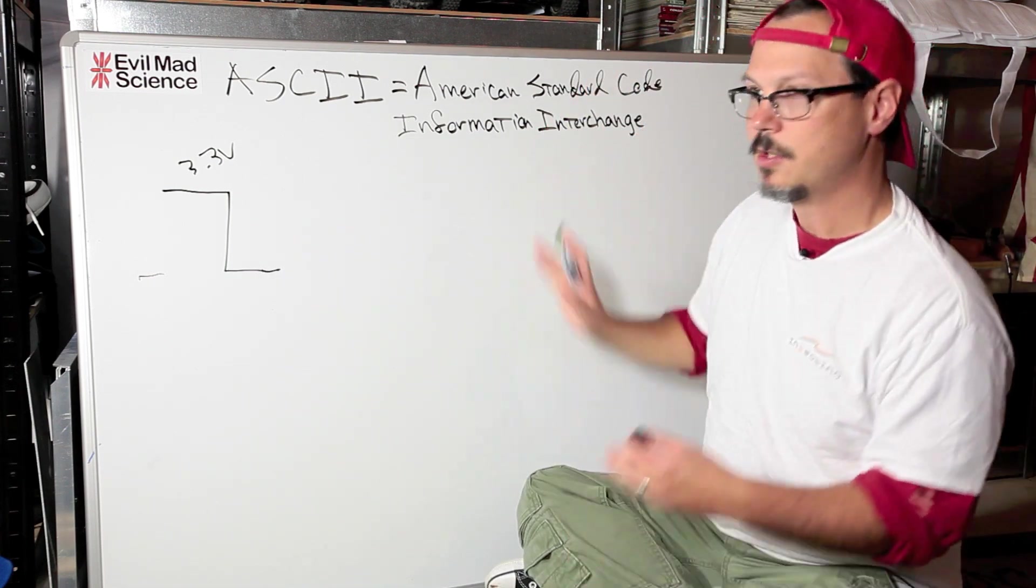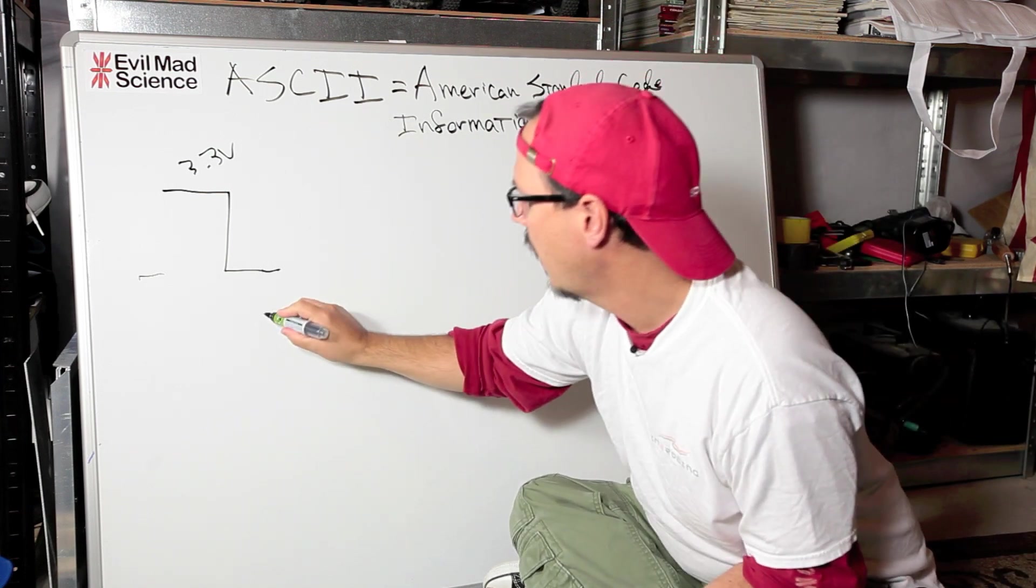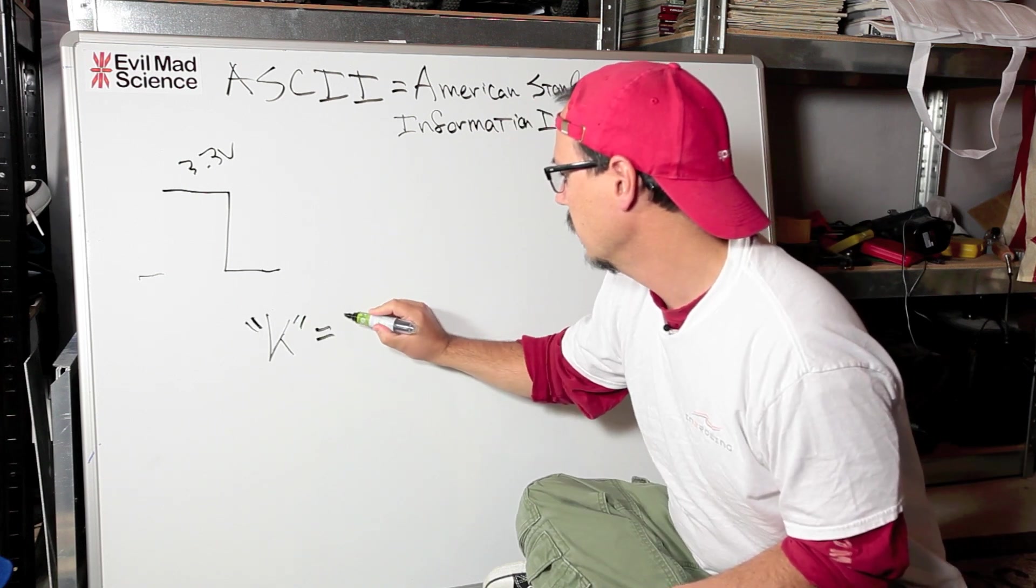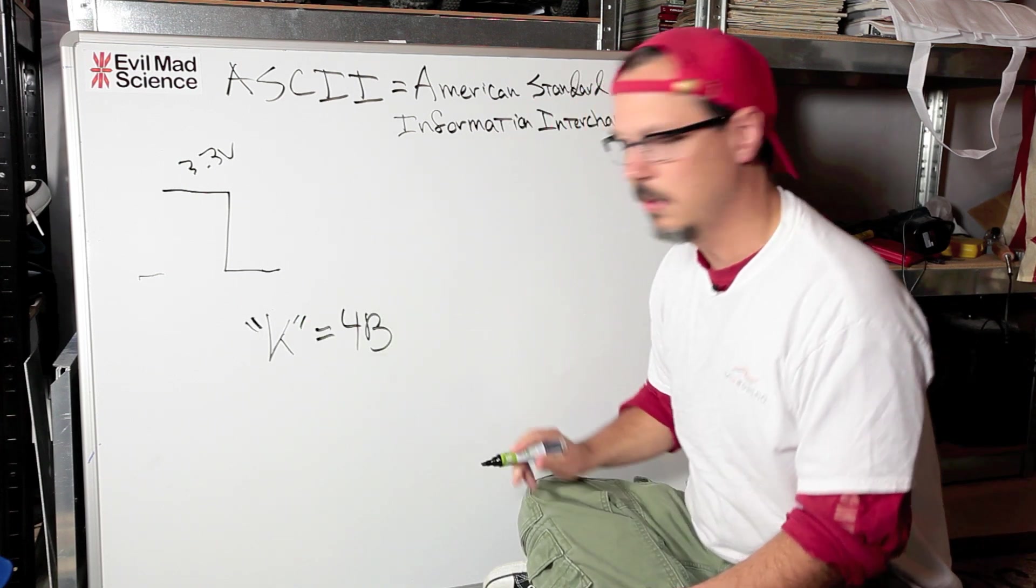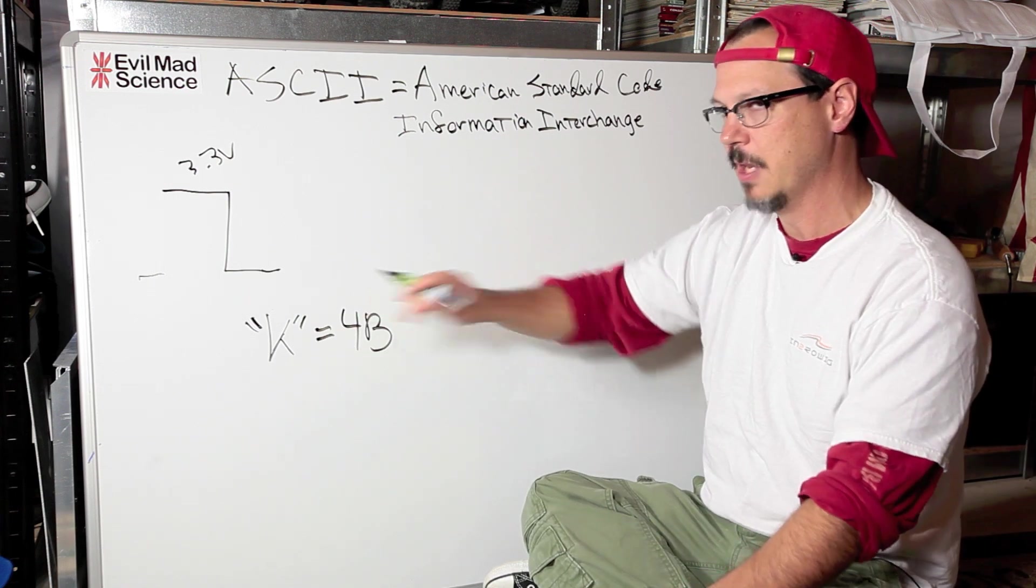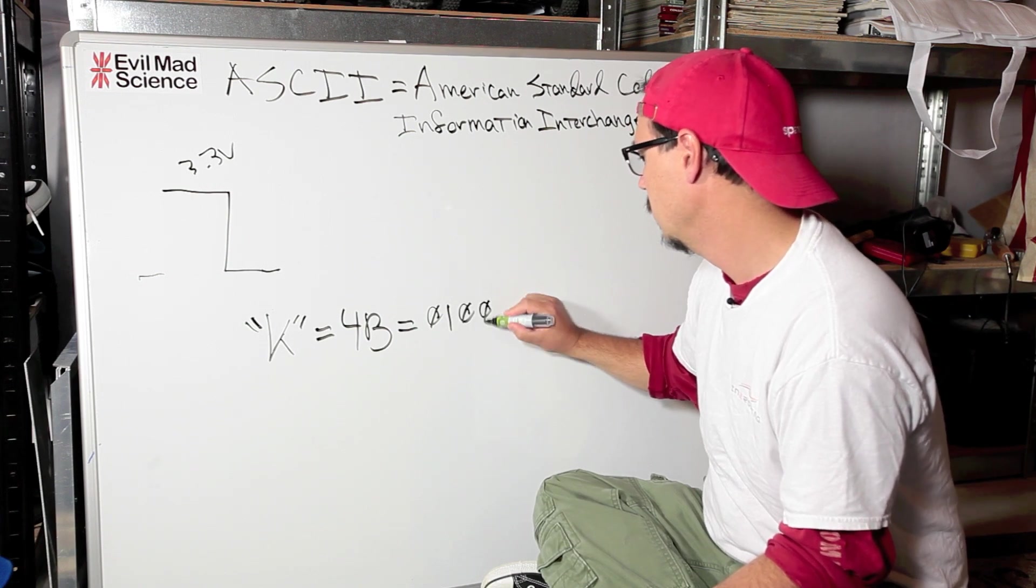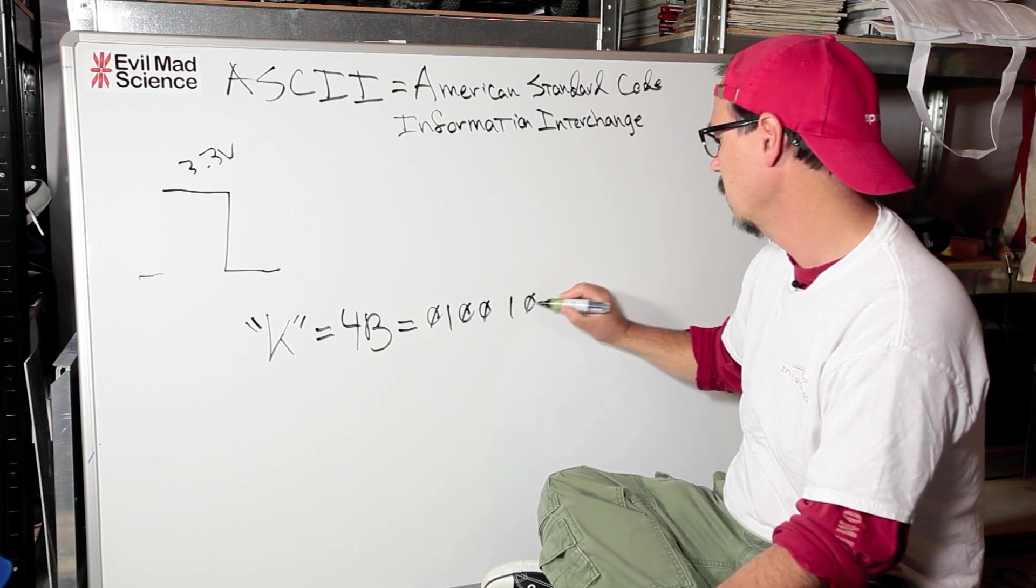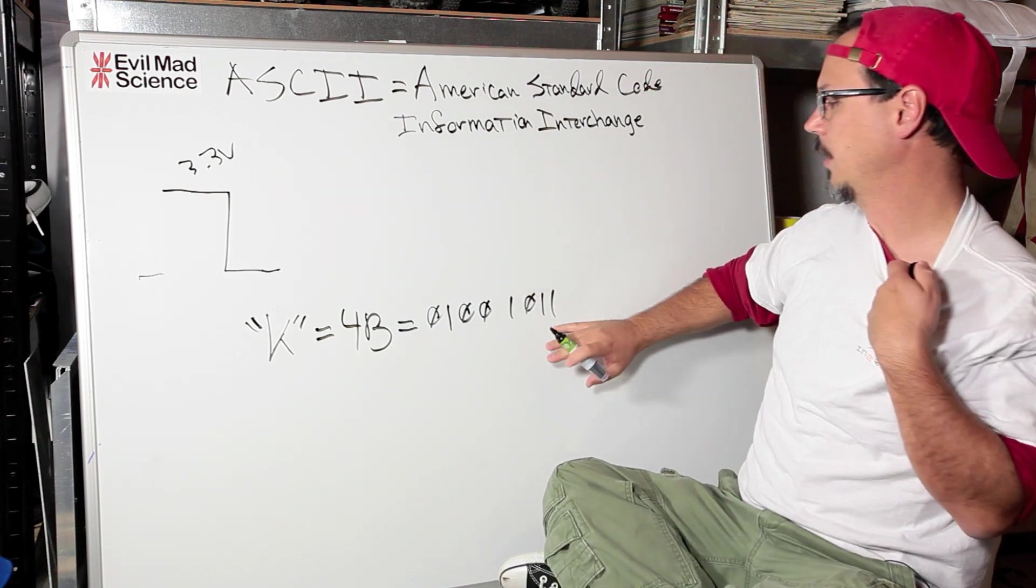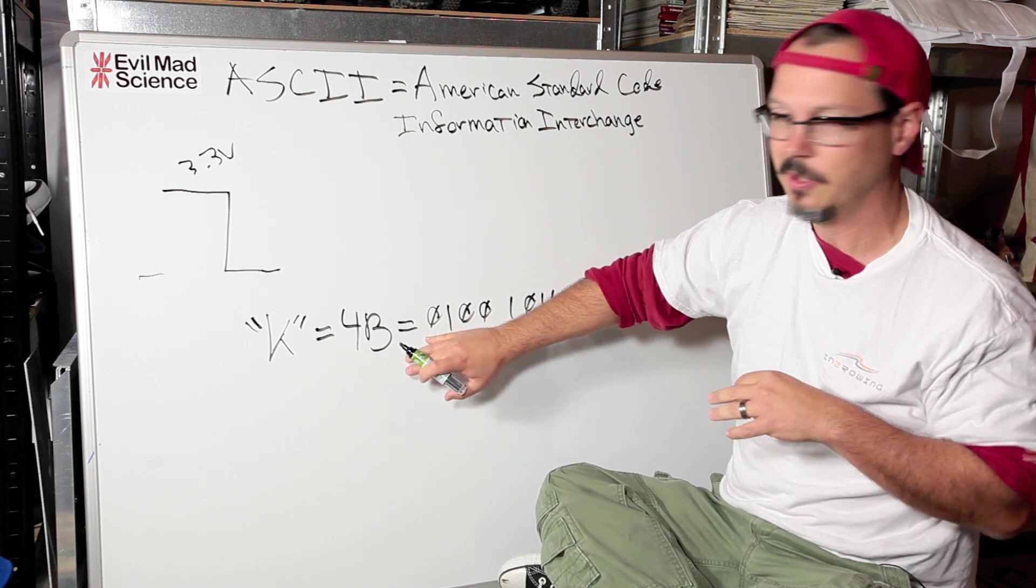Then after that, it starts clocking data out. I chose an example of capital K. And what that is, is 4B in hex. So it's an 8-bit value. As I said, it's 7 bits, but we leave the 8th bit. Specifically, what that is: 0, 1, 0, 0, 1, 0, 1, 1. What the UART will do is it will start clocking out the least significant bit first, and then it will clock these out sequentially until it gets to the last one.